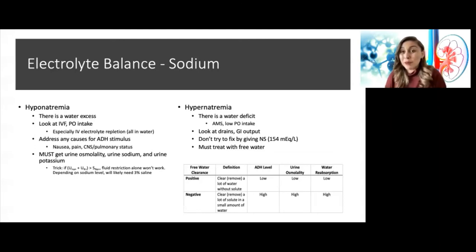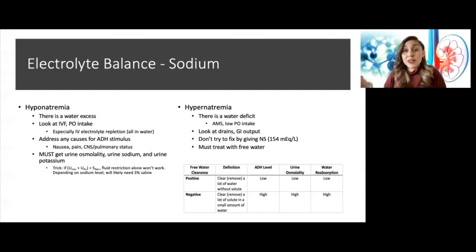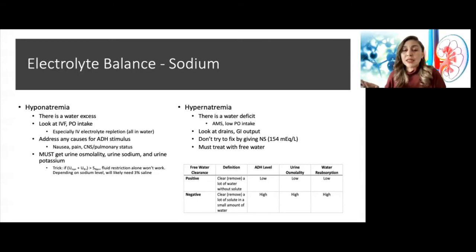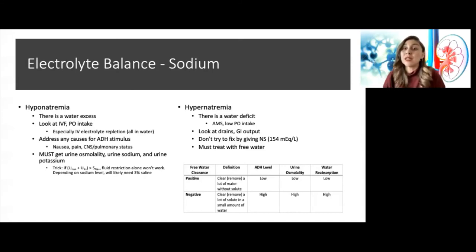Hypernatremia is more straightforward — it's somebody who hasn't had access to water. This often happens in ICU patients who are intubated, or elderly patients who become delirious from another condition — even a UTI can lead to this. Always look at urine output, GI output, and drains in hospital patients. Definitely do not try to fix hypernatremia by giving normal saline. Some think that since the sodium is 160 and NS concentration is 154 mEq/L, it will bring sodium down — but no. These patients are missing free water. Giving sodium in saline will keep things the same; what we want is to give water to dilute down the sodium.